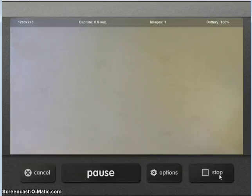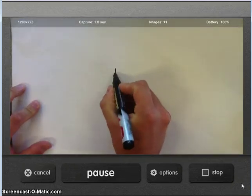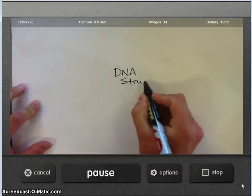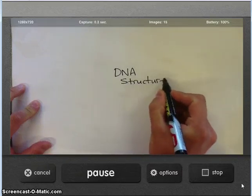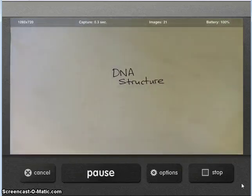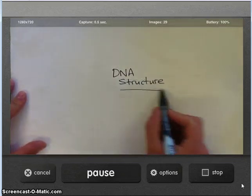And what this is doing is you can see up in the corner here, it's taking an image every second. Now if I start writing some information on here, so say for example, our topic is the structure of DNA. You can also turn that shutter noise off. Which I may be able to do here. That just makes it easier for me to talk and you're not interrupted by that sound. Okay, so DNA structure.